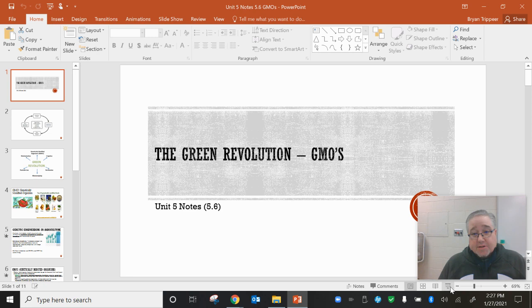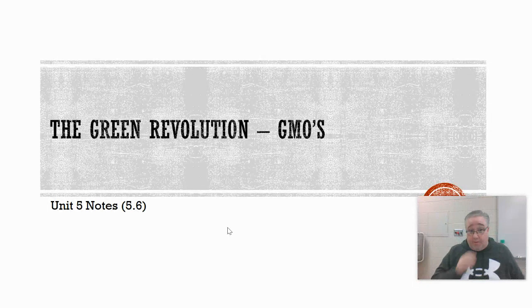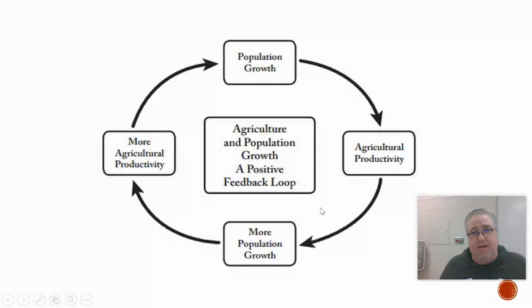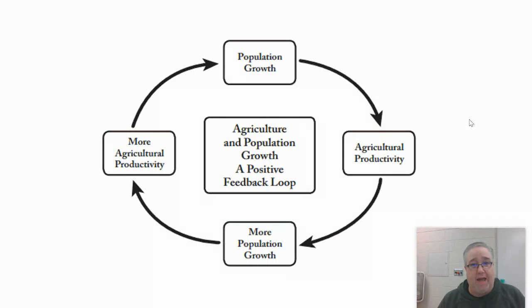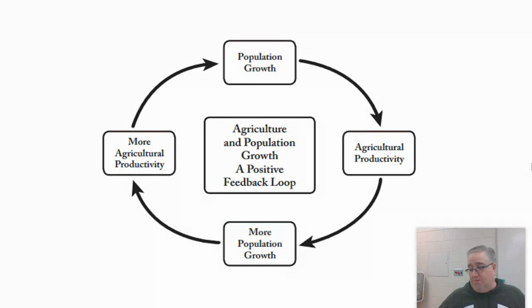All right everybody, we're going to continue today with our discussion about the green revolution. In the last lecture I want to revisit a couple of concepts that I think are really important. The first was this diagram showing a positive feedback loop pertaining to agriculture. We know that our population is growing — not just in this country but around the world.